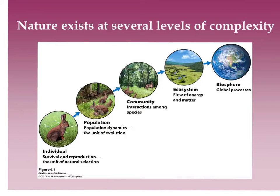We're going to look at some vocabulary in the first part of the chapter, starting at the organism level with an individual. If you take members of the same species — individuals of the same species in a defined area — then you have a population. It does need to be of the same species, so you could say all of the robins in that defined area. If you take all of the populations in a defined area, then you have a community.